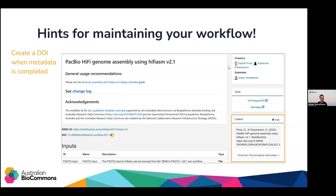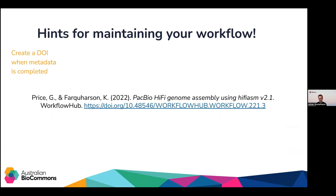The next suggestion is to create a digital object identifier. When your metadata is completed, this is what allows people to create a persistent link to your workflow — even to the specific version used in a research publication. That citation text then goes into the reference list in a research paper, on a website, or any other document where you discuss your workflow.